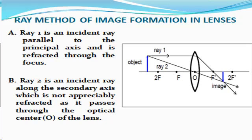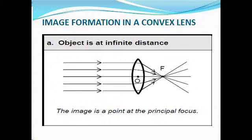Using the ray method, let us construct, locate, and describe the image formed by thin converging lens at different positions of the object from the lens. When an object is at infinite distance, the image is a point at the principal focus.